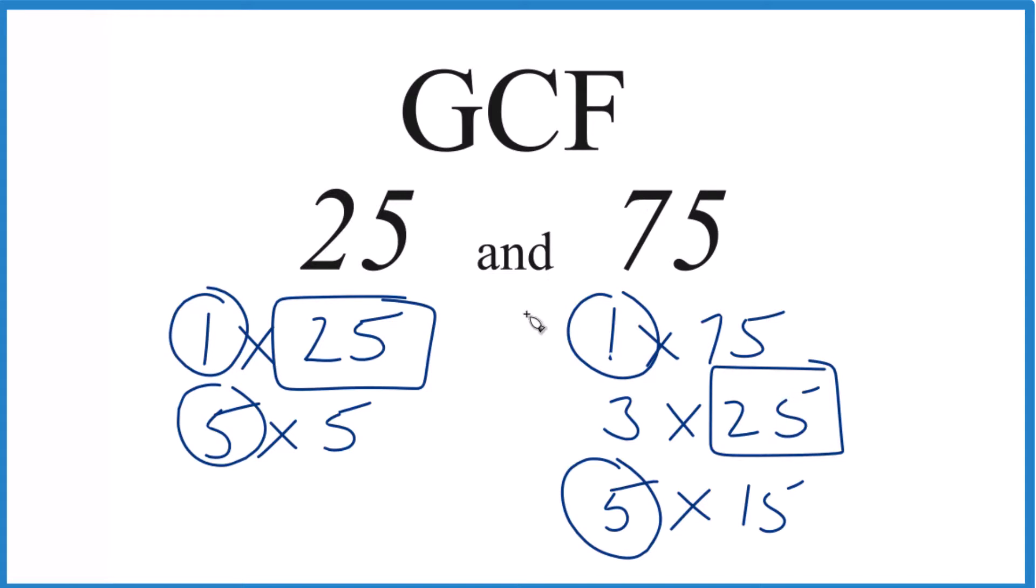So in answer to our question, the greatest common factor for 25 and 75 is 25. It goes into both 25 and 75 evenly.